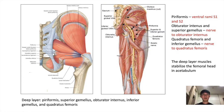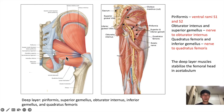Let's review the deep muscles of the hip region. We see the gluteus minimus and most importantly the piriformis muscle that passes through the greater sciatic foramen. Below that we have the superior gemellus muscle, then the obturator internus muscle, then the inferior gemellus muscle, and lastly the quadratus femoris muscle. These muscles act to stabilize the femoral head in the acetabulum.